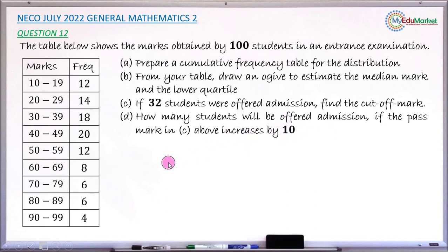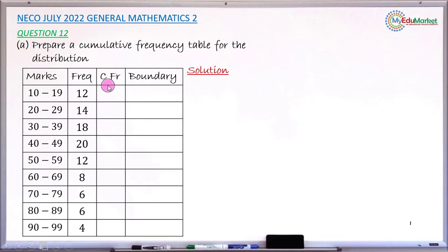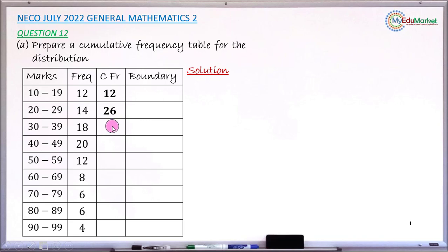Let's answer question (a): the cumulative frequency table. For the first class interval, marks 10 to 19, with frequency 12, the cumulative frequency is also 12. The next cumulative frequency is obtained by adding the current frequency to the previous cumulative frequency: 12 plus 14 gives 26. Then 26 plus 18 gives 44.